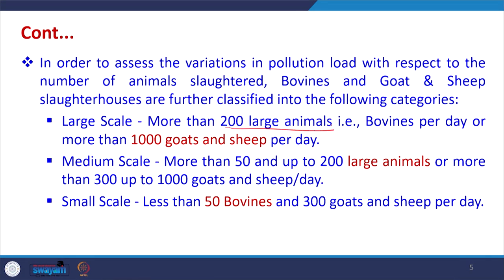Cattle and buffalo are slaughtered and wastewater is generated during various operations. To assess variations in pollution load with respect to the number of animals slaughtered, slaughterhouses are further classified into: large scale — more than 200 large animals or more than 1000 goats and sheep per day; medium scale — 50 to 200 large animals or 300 to 1000 goats per day; and small scale — less than 50 bovines and 300 goats and sheep per day.